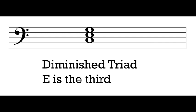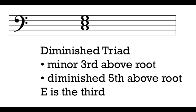The next step is to recall the intervals needed to make a diminished triad. What intervals above the root make a diminished triad? What kind of third do we have between the root and the third? What kind of fifth between the root and the fifth? The diminished triad has a diminished fifth above the root — that's where it gets its name — and it also has a minor third above the root. Those are the two intervals we want to make.